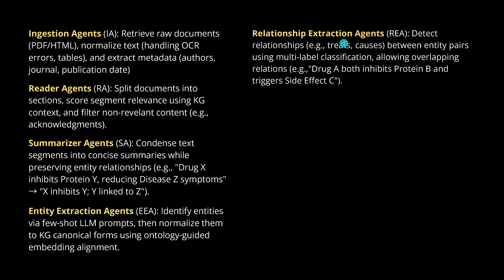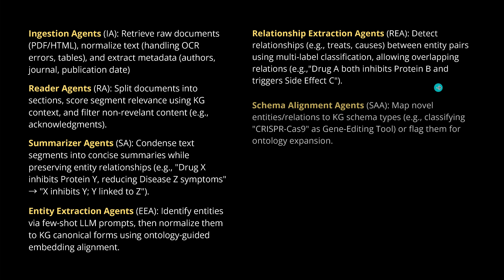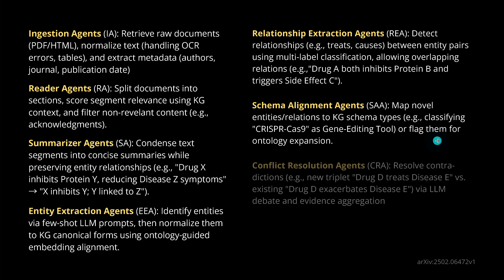We have a relationship extraction agent between entity pairs, using multi-label classification — allowing for overlapping relations. We also want to align our schema to the knowledge graph schema, so we have a schema alignment agent that maps novel entities or relations to the KG schema, or flags them for a complete ontology expansion, which is really interesting.